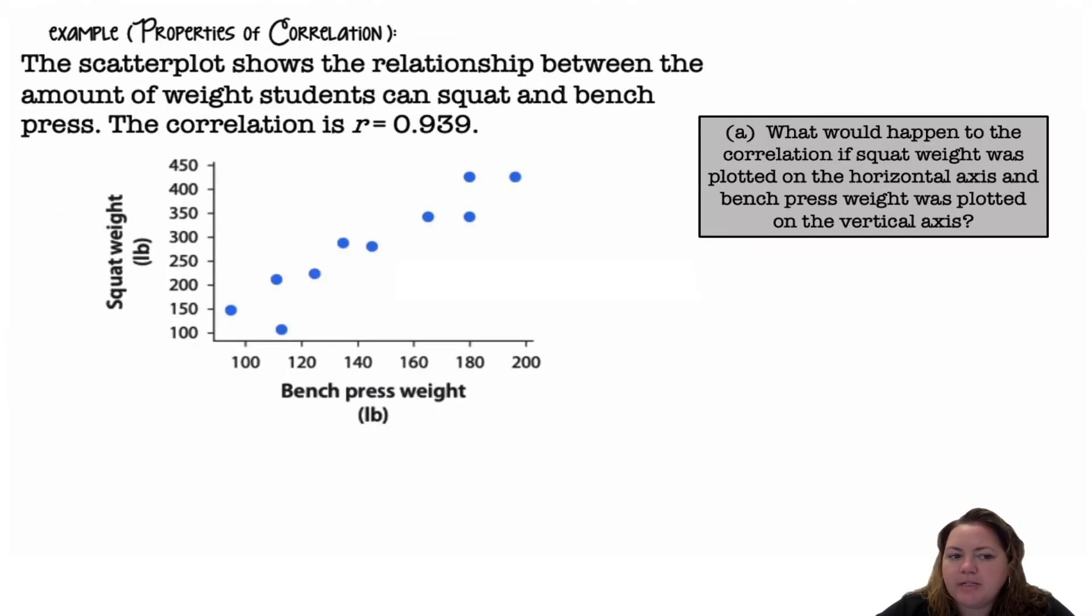Let's explore some of the properties of correlation. The scatter plot shows the relationship between the amount of weight students can squat and bench press. The correlation is R equals 0.939. You can see there's a positive relationship. As they're able to bench press more weight, they're also able to squat more weight.